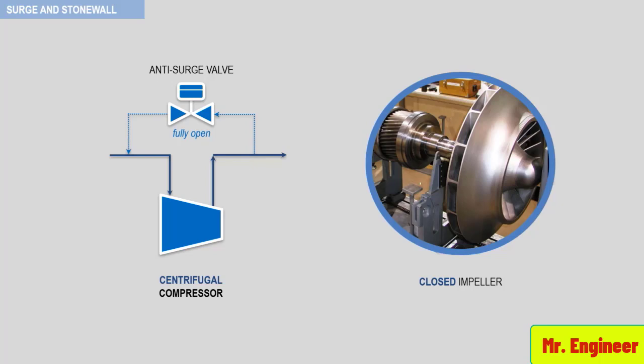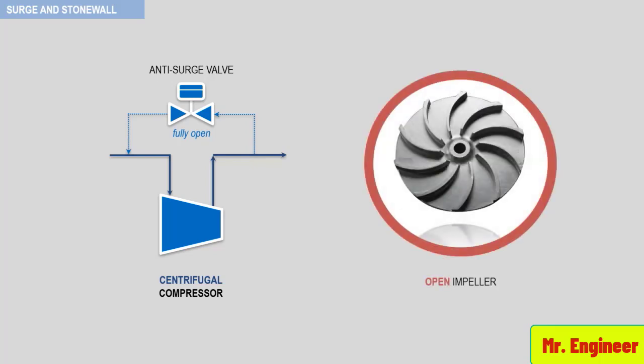In the case of open compressor impellers where the blades are supported by only the hub, impeller natural frequency excitation should be checked. Recall that open impellers are used in older designs for the first and second stages of large multistage compressors, and for plant and instrument air centrifugal compressors.